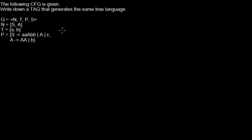In this video, I convert this context-free grammar into a tree-adjoining grammar that accepts the same tree language. That's an important point because the context-free grammar generates a string language.